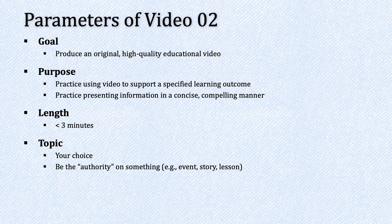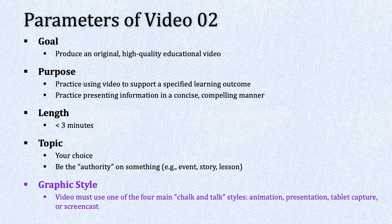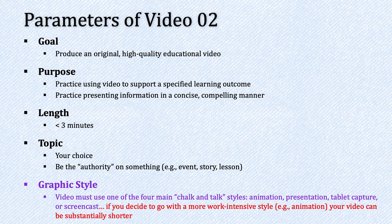The parameters of video project two are very similar to project one. The goal is to produce an original high-quality educational video. The purpose is to practice using video to support a specified learning outcome and to practice presenting information in a concise and compelling visual manner. The length should be under three minutes. The topic is up to you — you should be the authority on something of interest to you. Your video must use one of the four main chalk and talk styles: animation, presentation, tablet capture, or screencast. If you choose a more work-intensive style such as animation, your video can be substantially shorter than three minutes.